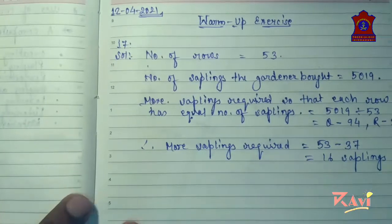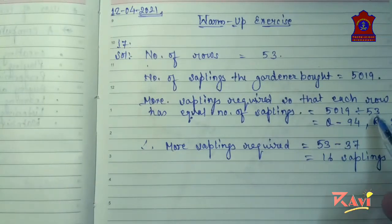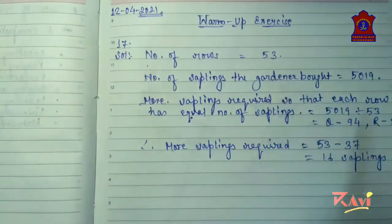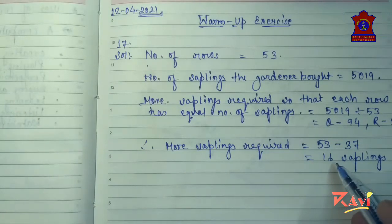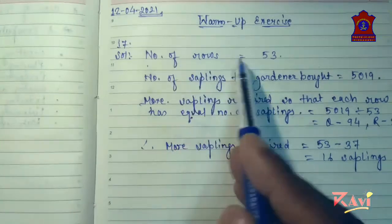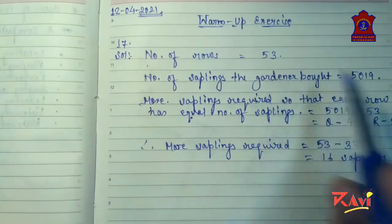So what will you do? You will be doing the division and writing the quotient and remainder, and remainder will be subtracted by the number of rows. This is the least number of saplings required so that each row will have the same number of saplings.